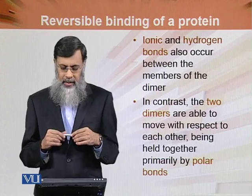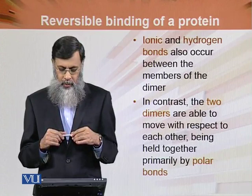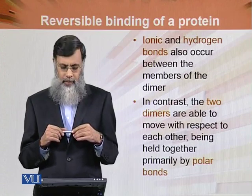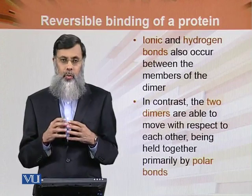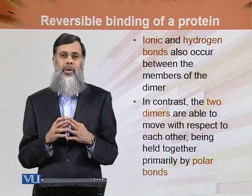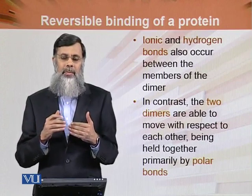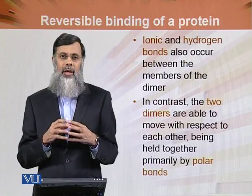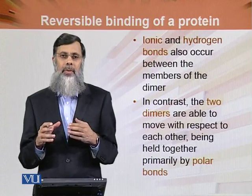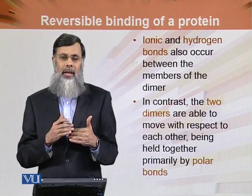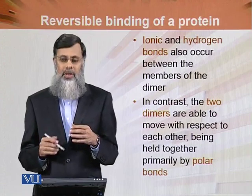In contrast, the two dimers are able to move with respect to each other, being held together primarily by polar bonds. Within each dimer, there are hydrophobic bonds, ionic bonds, and hydrogen bonds, but between the two dimers, the main interactions are polar bonds.